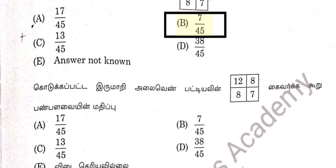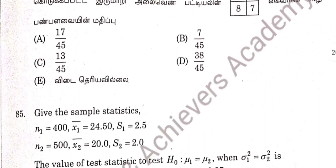Question 84: Answer is 7 by 45. This is a bivariate frequency table based on I-squared — 84 option noted.